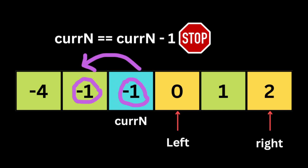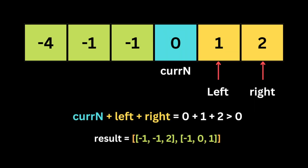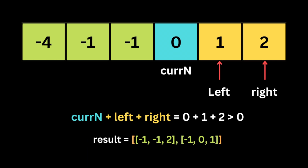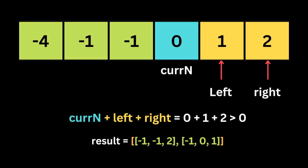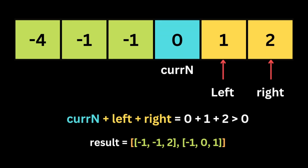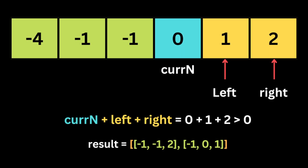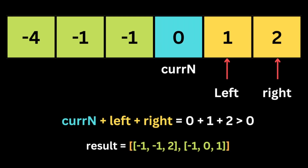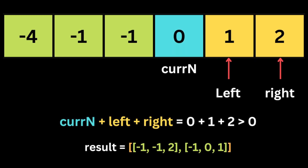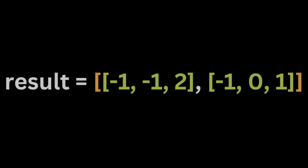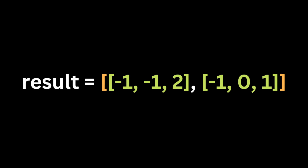The current number is now minus one again, which would repeat the same values giving us the target zero. To avoid duplicate triplets, we check if the next value in the sorted list is the same as the previous number — if true, we jump to the next number and skip the current one. So we skip minus one and jump to zero. With zero as the current number, the left pointer is one and the right pointer is two, so one plus two plus zero equals three, which is bigger than zero. The left meets the right pointer, so we don't process this further.